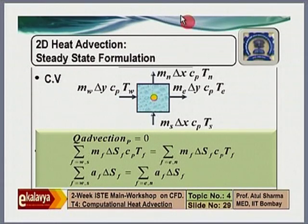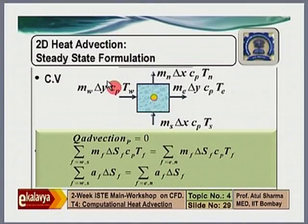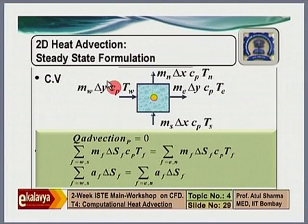Now let us go to the steady state formulation. In a steady state formulation, we do not consider the unsteady part of the conservation law or the governing equations. We are taking a pure advection situation, which means the rate of change of heat transfer inside the control volume plus the rate of change of heat transfer across the control volume equals zero. We have assumed that conduction heat transfer is negligible compared to advection heat transfer, and volumetric heat generation is zero.